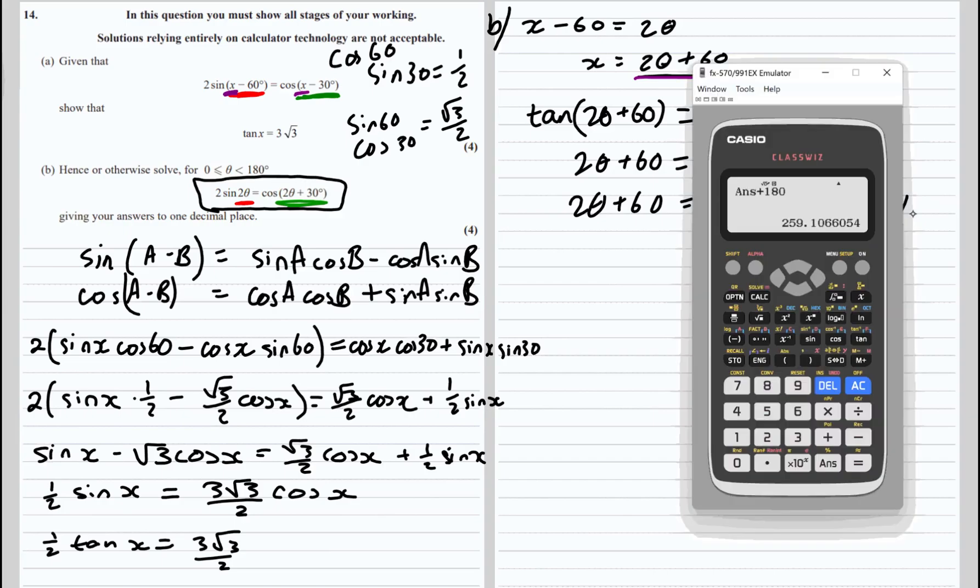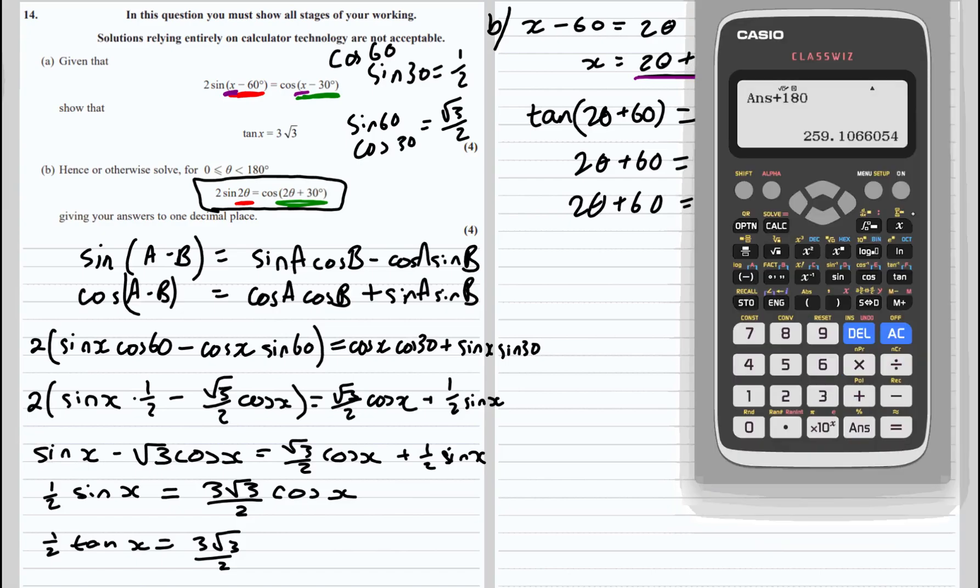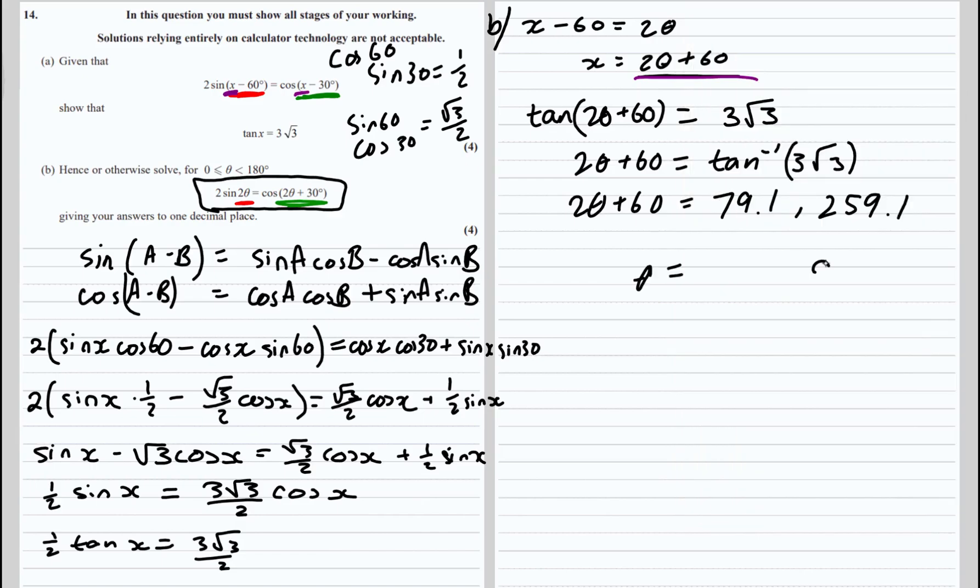We're not going to need another one, so from these we're going to take away 60 and then divide by 2. Take away 60, divide by 2, we get 99.6.